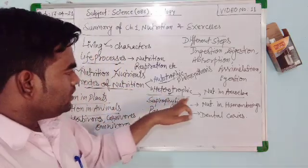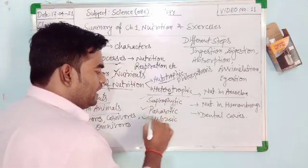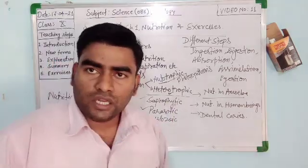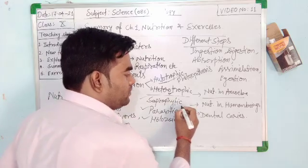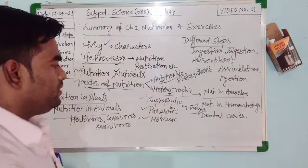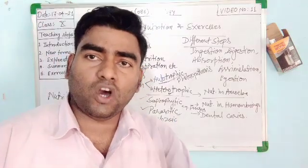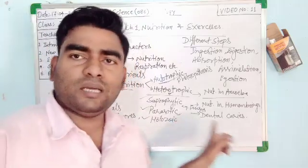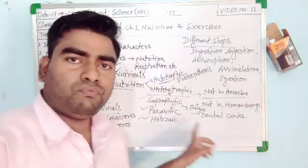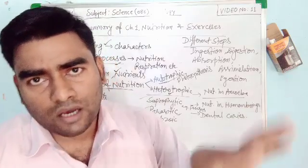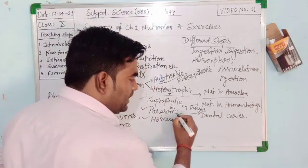Heterotrophs can be further divided into three types: saprophytic, parasitic, and holozoic. Saprophytes are organisms that take nutrition from dead and decaying materials — for example, fungi. Parasites feed on or inside a host organism; examples include the plant Cuscuta, mosquitoes, flies, lice, and leeches as ectoparasites, and Ascaris and tapeworms as endoparasites.